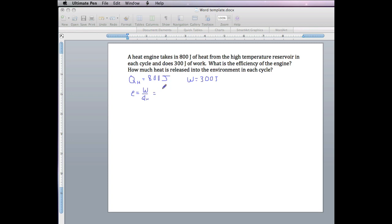So that would be 300 joules divided by 800 joules. When you divide, the joules cancel, and we get 0.375.